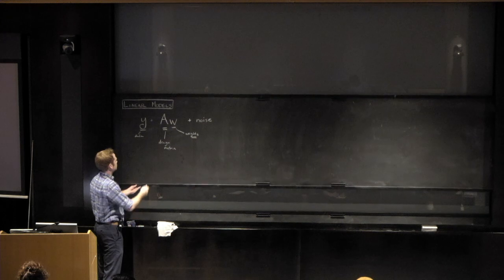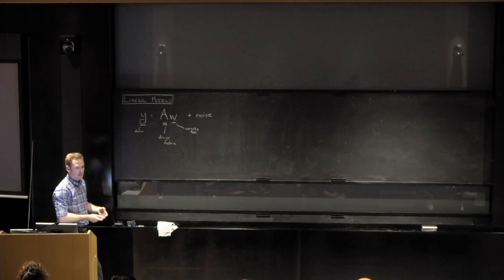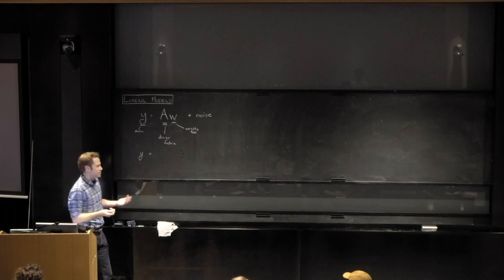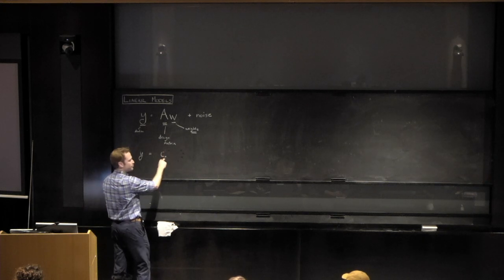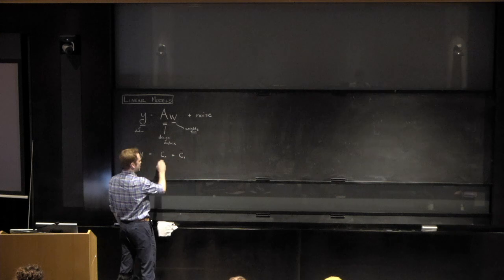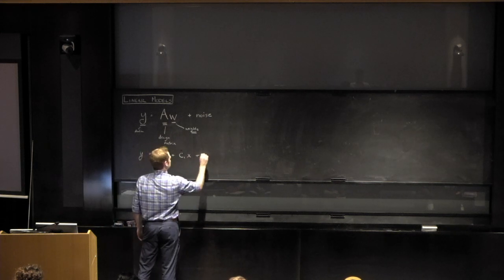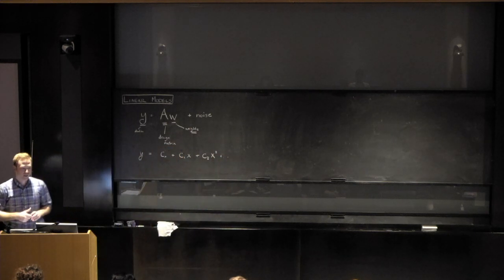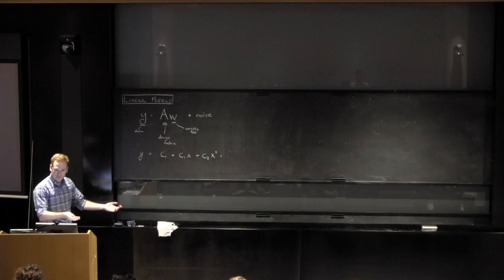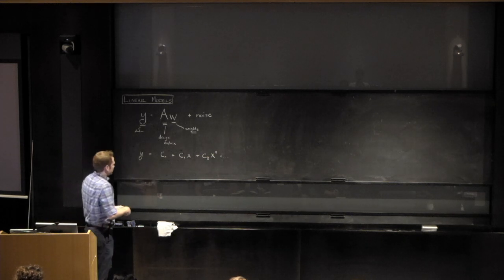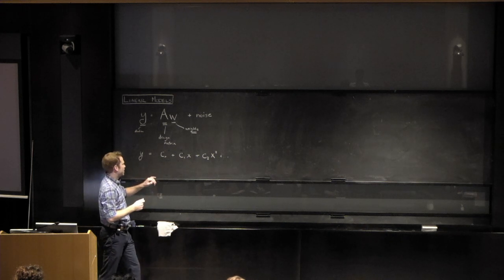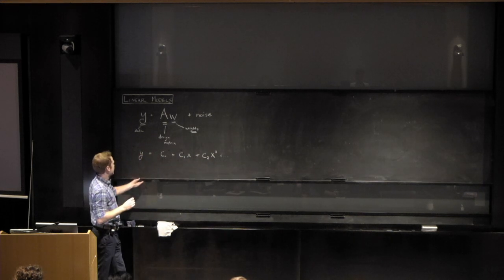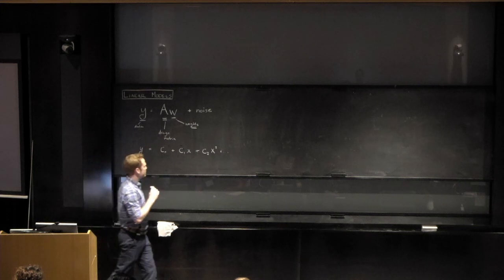One of the simplest linear models is fitting a polynomial to data. If your model is a polynomial, you might have a constant coefficient, a linear coefficient times x, plus a quadratic coefficient times x squared. Even though you have x, x squared, x cubed, this is still a linear model in the weights. I can show you why — I can write this as a matrix equation.